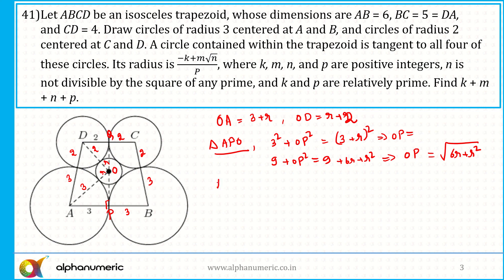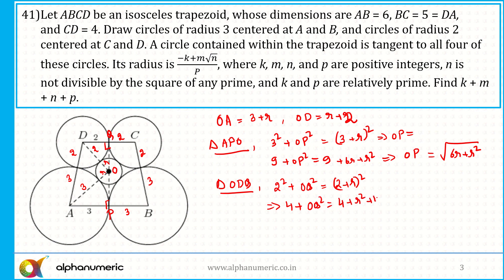Similarly in triangle ODQ, it is a right-angle triangle. Applying Pythagoras: 2² plus OQ² equals (2 plus R)², so 4 plus OQ² equals 4 plus R² plus 4R. From this, OQ equals root of (4R plus R²).